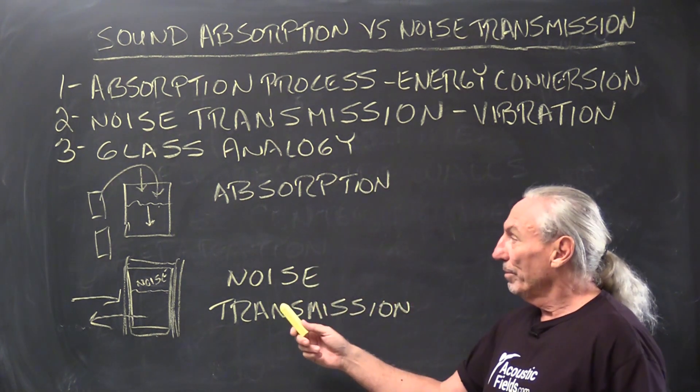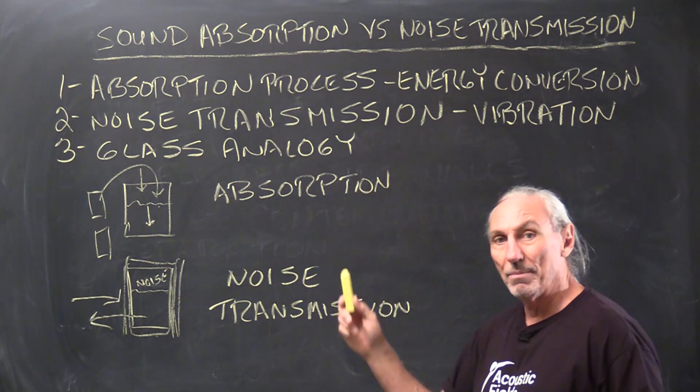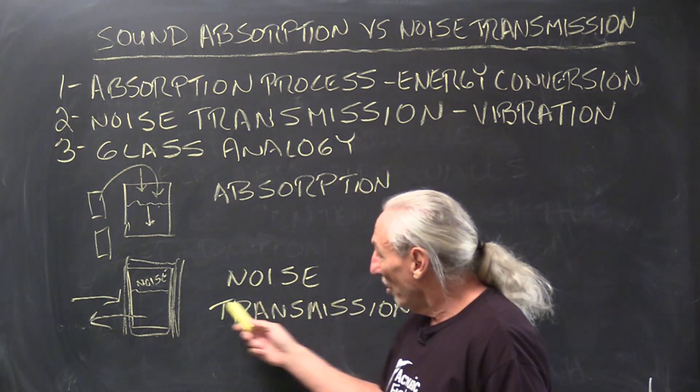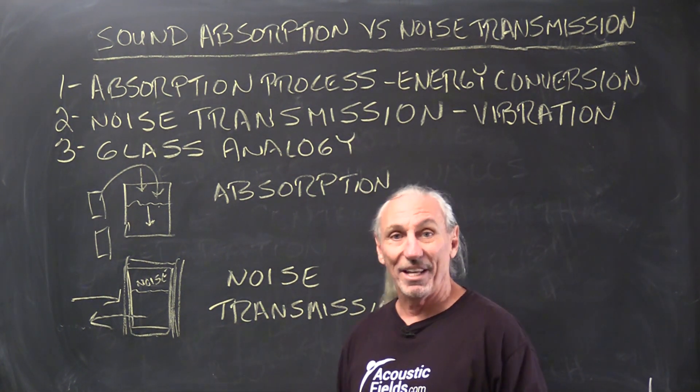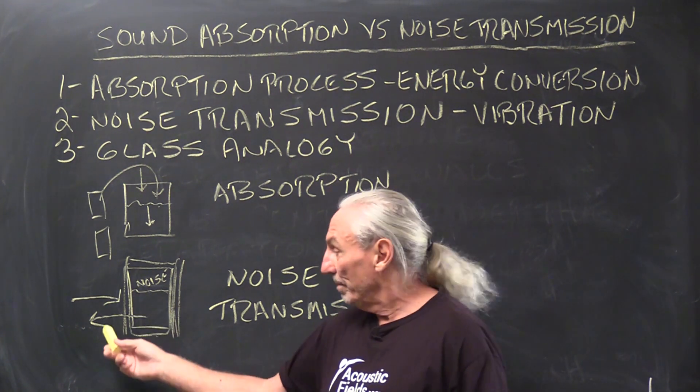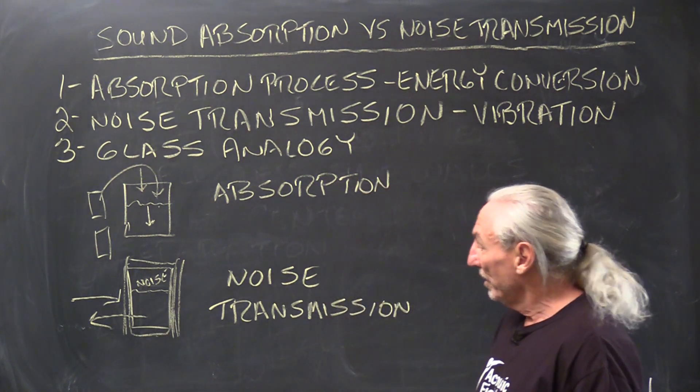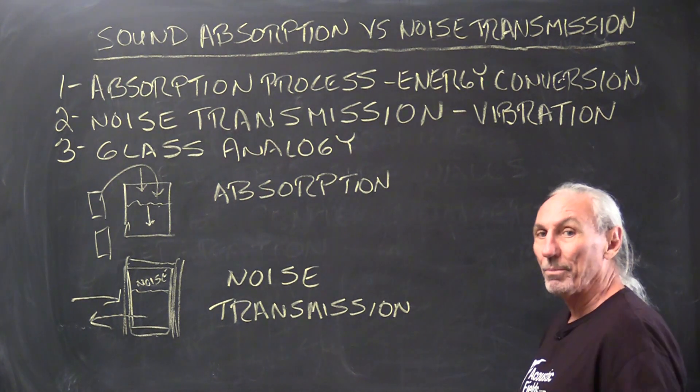So the goal with absorption is to reduce the amount of energy in the room. The goal with noise transmission is not to let it in the room at all or not to let it out of the room by dealing with structure. So completely different approaches.